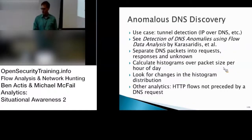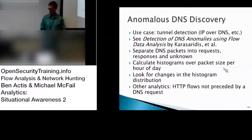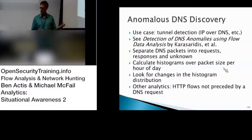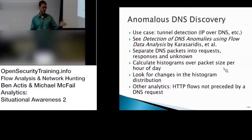There was an academic paper on detection of DNS tunneling using flow. They were looking at tunneling and a trojan that spread over DNS. In this paper, they took DNS packets, grouped them into three groups: requests, replies, and unknown. They calculated histograms of packet size per hour and per day — what does my normal distribution for DNS requests between 10 and 11 a.m. look like? — and then looked for changes in that histogram.